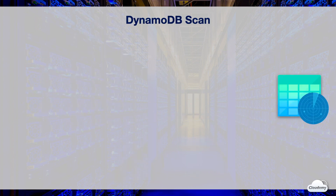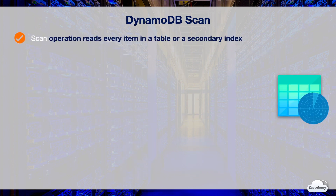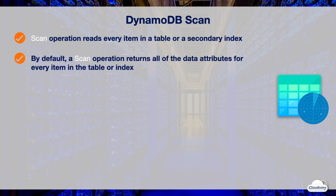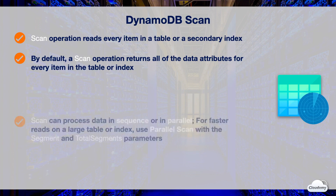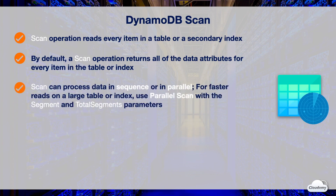The scan operation reads every item in a table or a secondary index. By default, scan returns all of the data attributes for every item in the table or index. The scan operation can process data in sequence or in parallel. DynamoDB distributes data across multiple physical partitions. A sequential scan can only read one partition at a time, so it might not fully use the provisioned throughput.